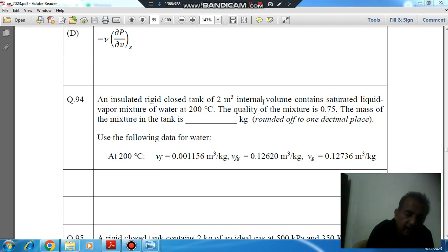Hello, welcome again. We are solving GATE 2023 XE thermodynamics chapter portion, number 94. An insulated rigid closed tank of 2 meter cube internal volume contains saturated liquid-vapor mixture of water at 200 degrees Celsius. The quality of the mixture is 0.75.